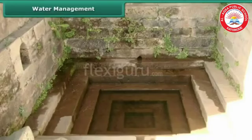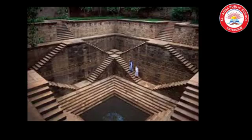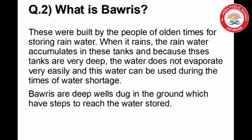Another water storage system is boweries. Boweries are step wells that store water. Boweries were the traditional way of collecting water. When it rains, the rainwater accumulates in this tank, and because these tanks are very deep, the water does not evaporate very easily, and this water can be used during times of water shortage. But the boweries fell into disuse and garbage started piling in these reservoirs.